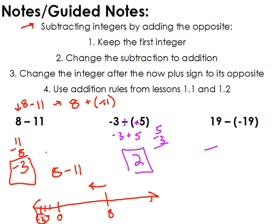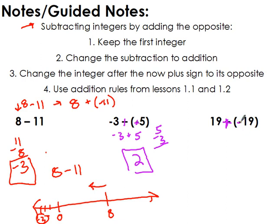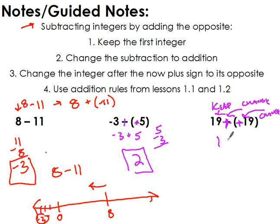Look at this one: 19 minus negative 19. A lot of people might think it's 0, but that's not correct. Let's add the opposite: change to addition, then change the sign of negative 19 to positive 19, giving us 19 plus 19. Another way to remember this is keep, change, change — keep the sign of the first number, change subtraction to addition, change the sign of the second number. A minus a negative really becomes a positive, so 19 plus 19 is 38.